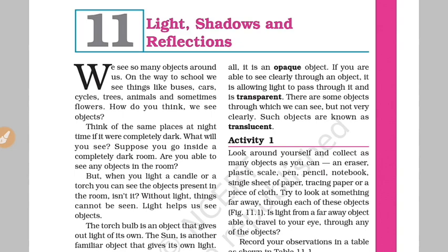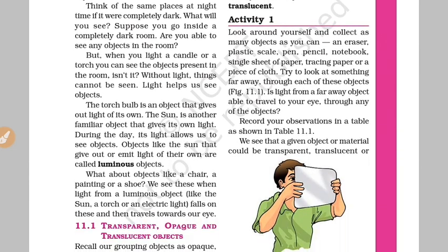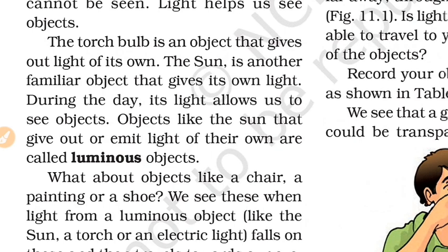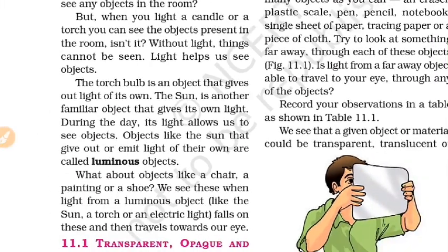What are the basics? First, we have luminous objects. What is a luminous object? A luminous object is a source of light — it produces light. For example, the sun. The sun is a luminous object.